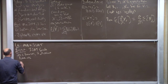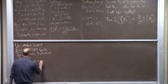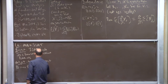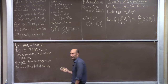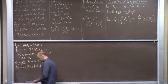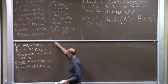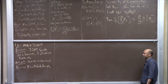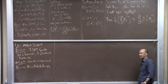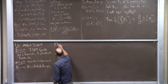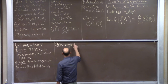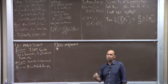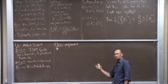The output truth assignment sets each variable either true or false to maximize the number of satisfied clauses. This includes the SAT problem as a special case — that's just checking whether the optimal solution is M. So certainly this is an NP-hard problem. But it turns out, linearity of expectation will tell us it's actually embarrassingly easy to get a pretty good approximation guarantee.